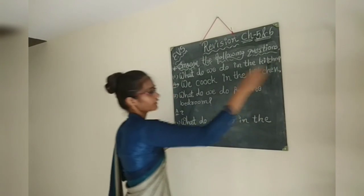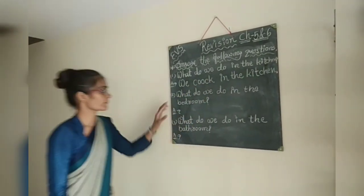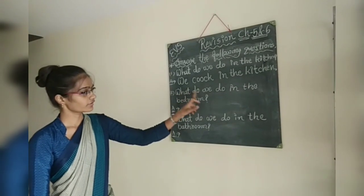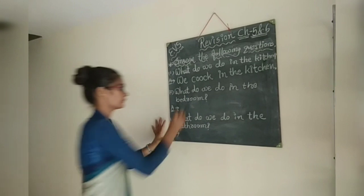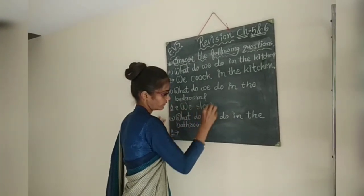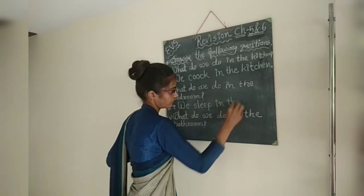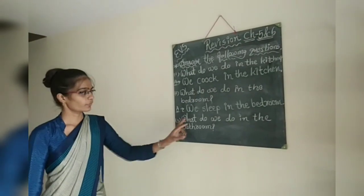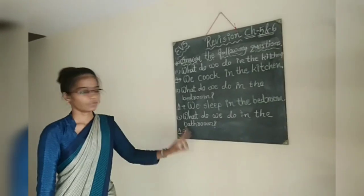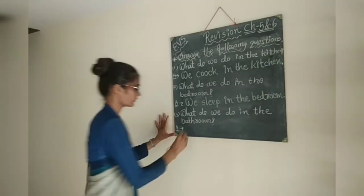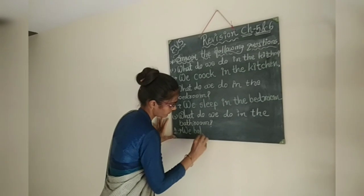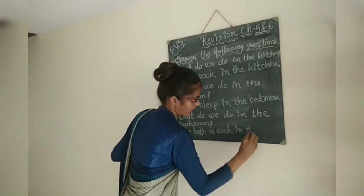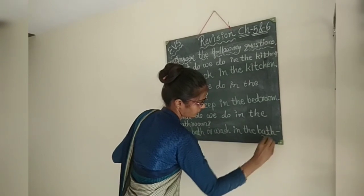All of you have to write all the answers in full sentences. Question number 2: What do we do in the bedroom? We sleep in the bedroom. Question number 3: What do we do in the bathroom? We take bath or wash in the bathroom.